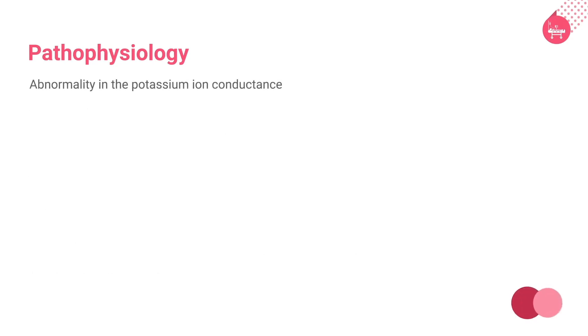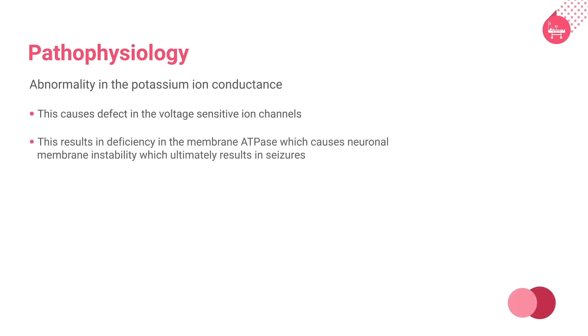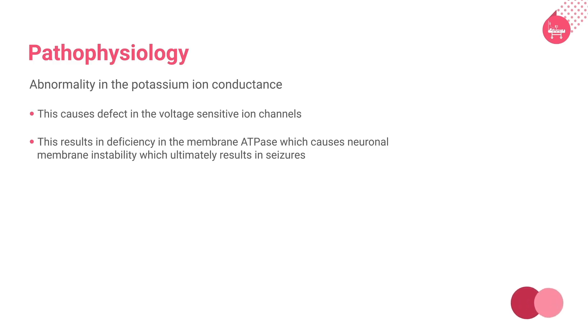Another widely accepted theory under the ion channel mechanism is the abnormality in the potassium ion conductance. This causes a defect in the voltage-sensitive ion channels, resulting in deficiency in the membrane ATPase, which causes neuronal membrane instability and ultimately results in seizures.